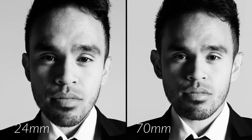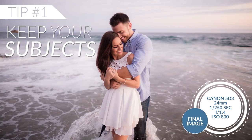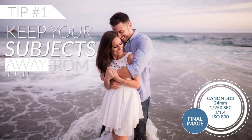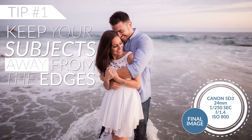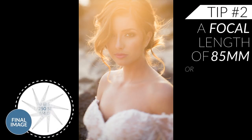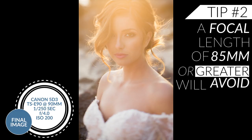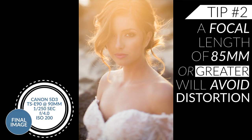So here are some simple tips. When you're using wide angle lenses, keep your subjects away from the edges where distortion is heavier. Tip number two: for a closeup portrait, a focal length of 85 millimeters or greater is going to avoid distortion.